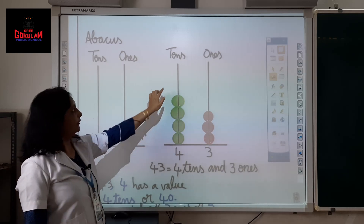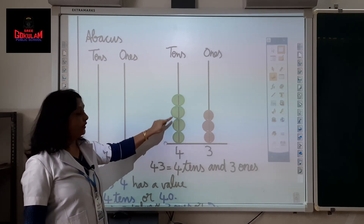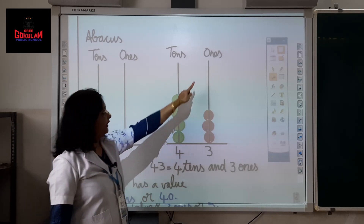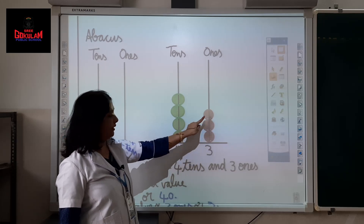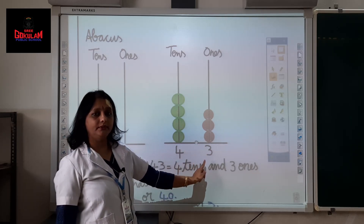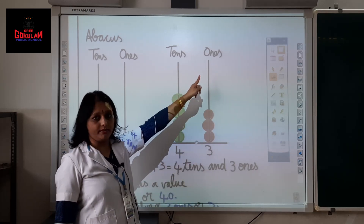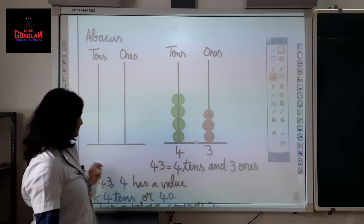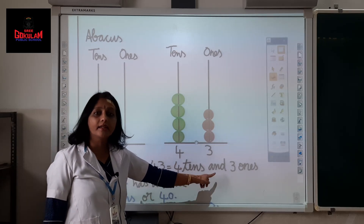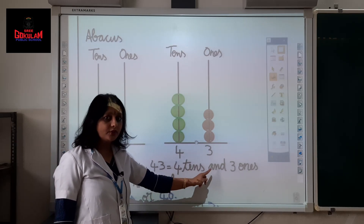Now let us consider this number. In the tens place you see 1, 2, 3, 4 — 4 green beads, so I wrote 4 below. In the ones place: 1, 2, 3 — there are 3 red beads, so 3. What is the number? Number 43. 4 in tens place, 3 in ones place. 43 is equal to 4 tens and 3 ones.